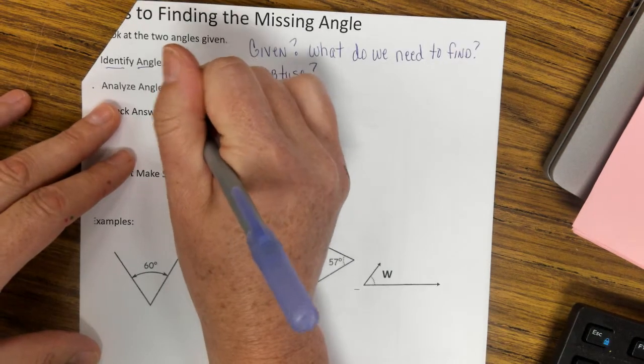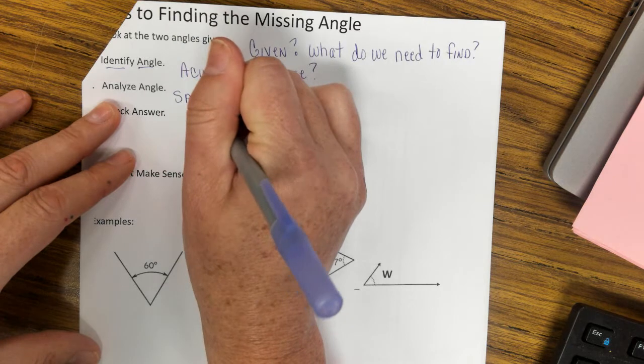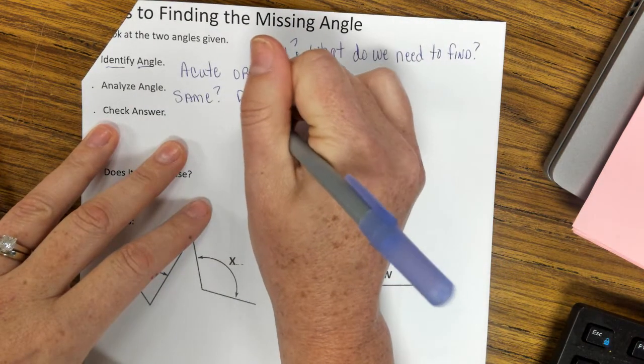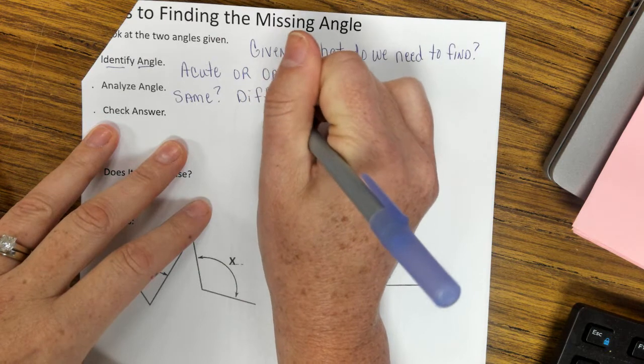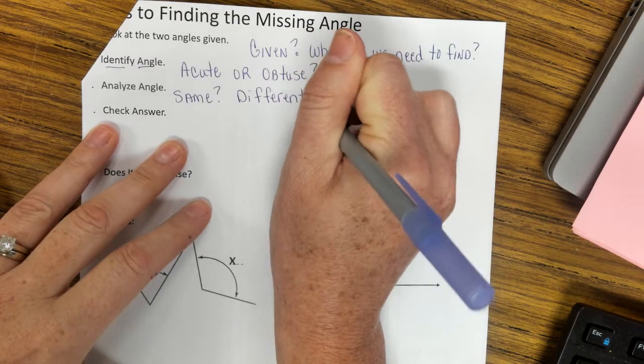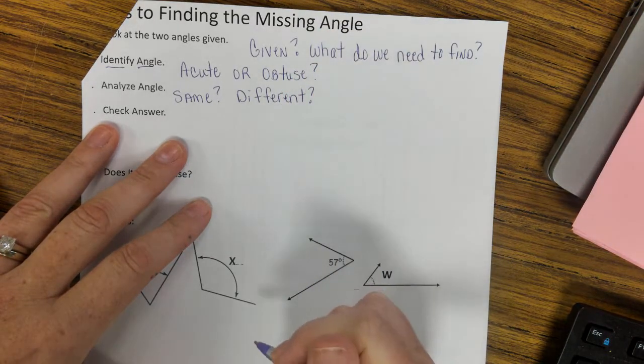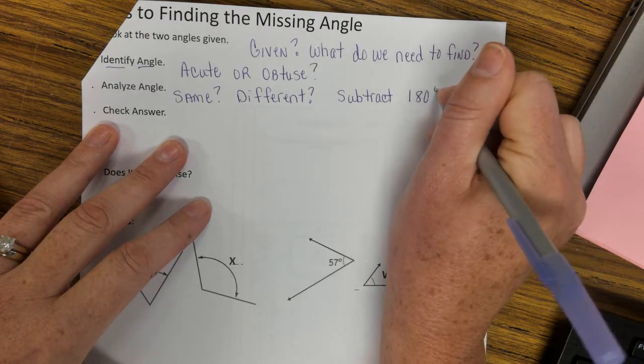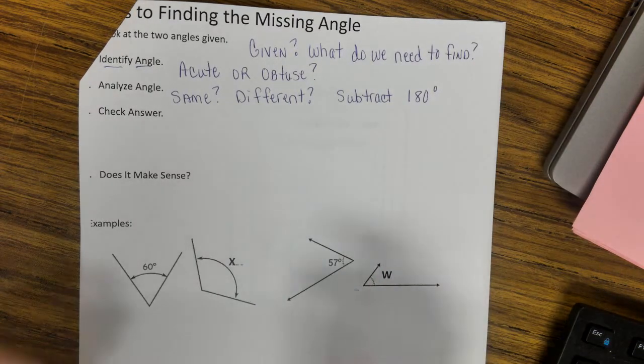Are the angles the same or do the angles look like they're the same, or do the angles have different measurements? If they are different, we're often going to subtract the amount we got from 180 degrees.